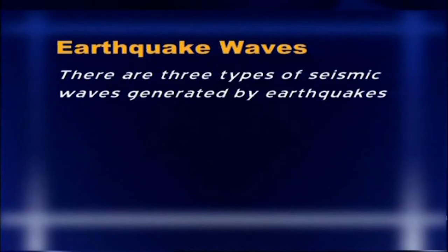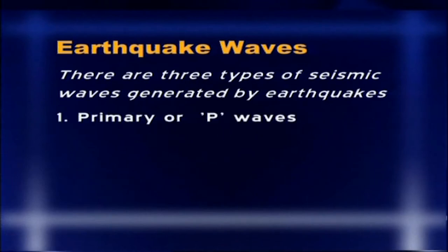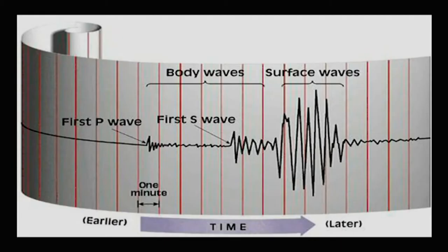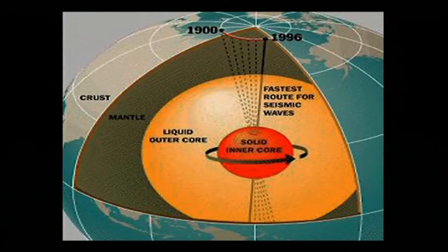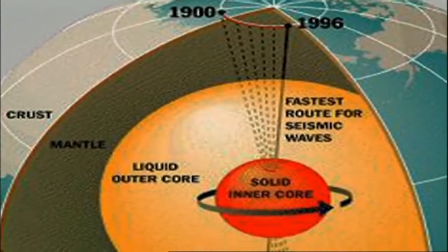There are three types of seismic waves generated by earthquakes. The first are primary or P waves. They have the shortest wavelength and high frequency. They are longitudinal waves which pass through the solid crust and mantle, and also through the liquid part of the core of the earth.